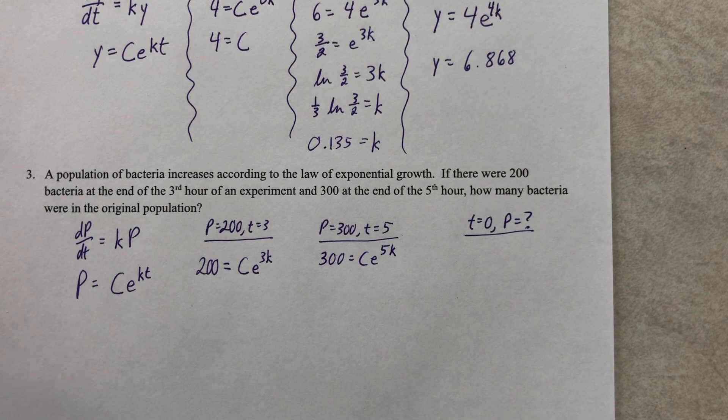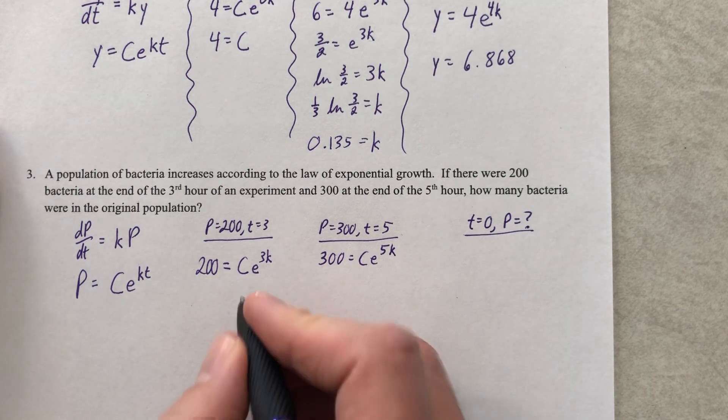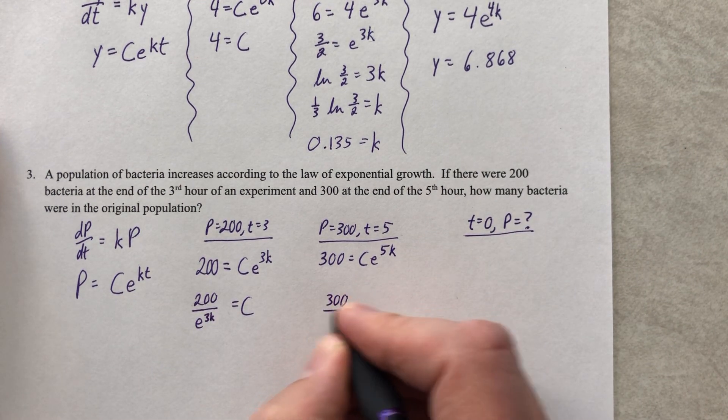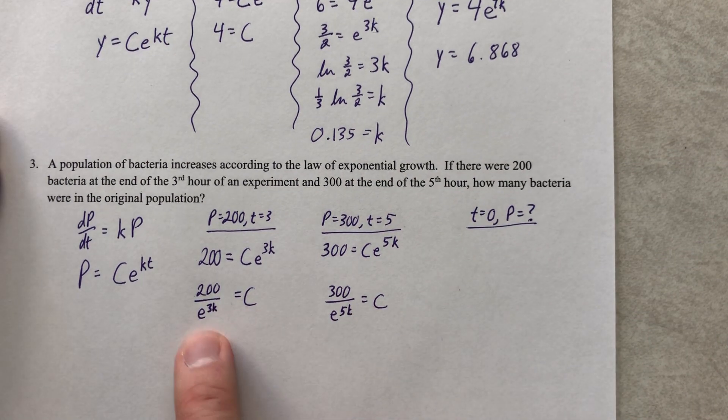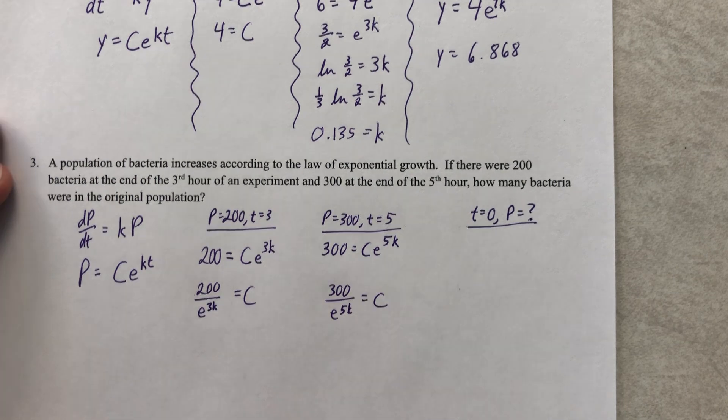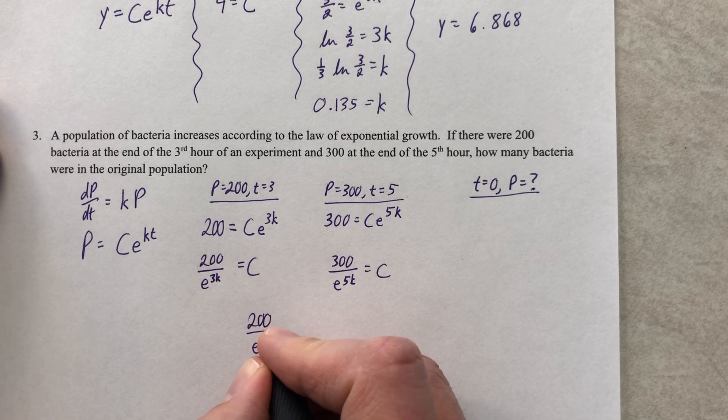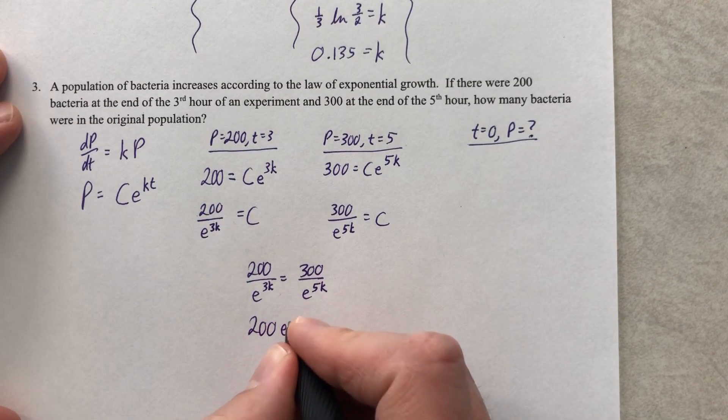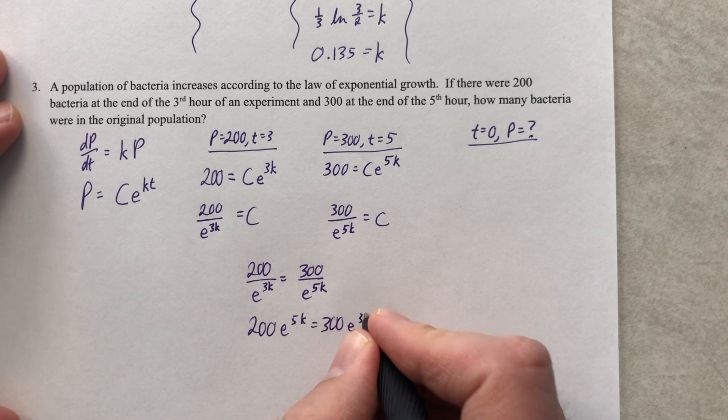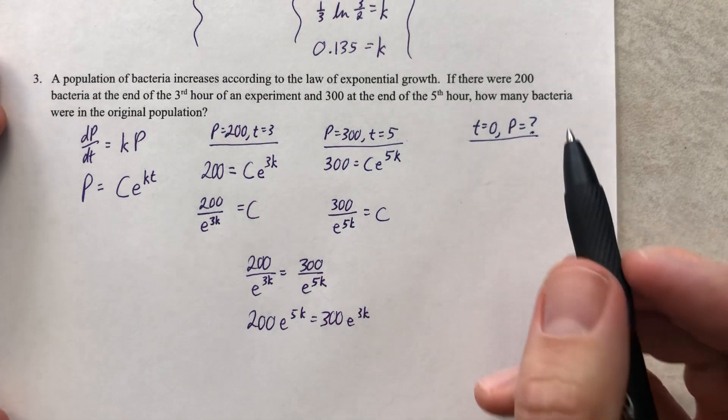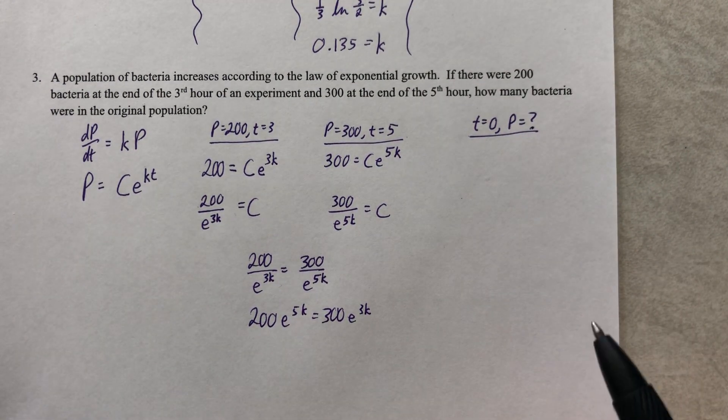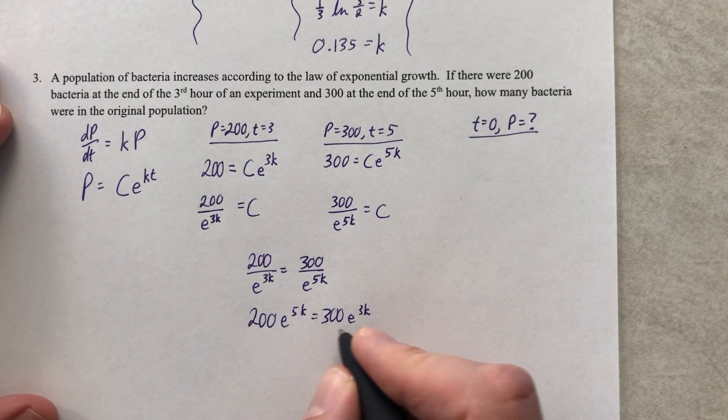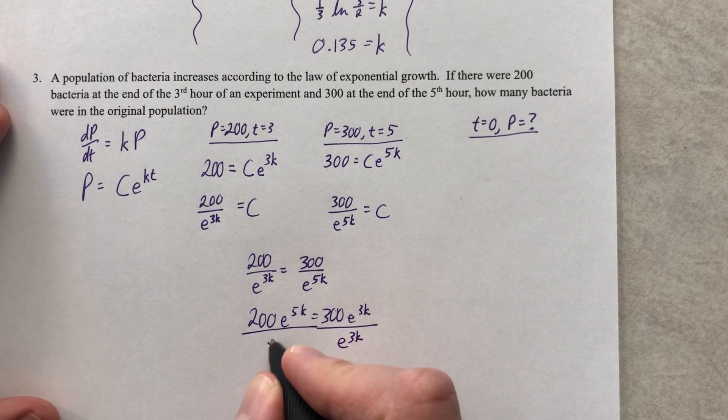You have a nonlinear system of equations. We have a C and a k that are lurking. The best way to find them is to solve a system of equations. I have a recommendation. Let's divide by e to the 3k, and it'll give us C over here. And let's divide by e to the 5k, and it'll give us C over here. If C equals this and C equals this, they must equal each other. So we'll set these equal to each other and solve. 200 over e to the 3k equals 300 over e to the 5k. We'll cross multiply.